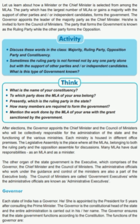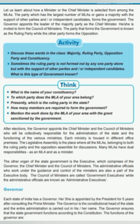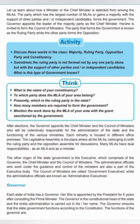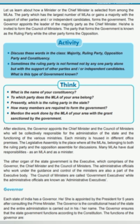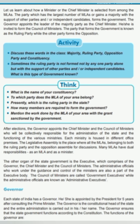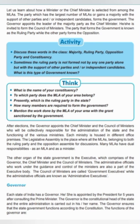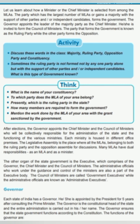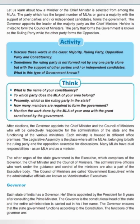Majority means having more votes than half of the total votes. For example, there are 182 seats in the Gujarat Legislative Assembly. Half of them is 91. If a party has just one more seat than 91 — or many more — it is called a majority. The party which operates the state is called the ruling party. For example, presently the Bharatiya Janata Party has the majority of votes, so BJP is the ruling party in Gujarat.